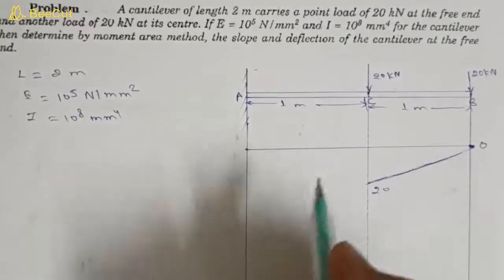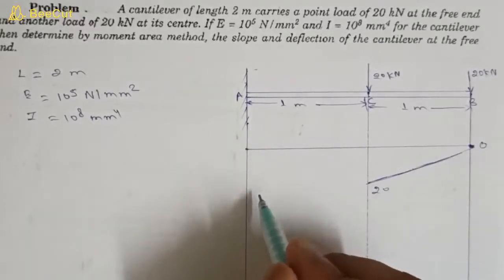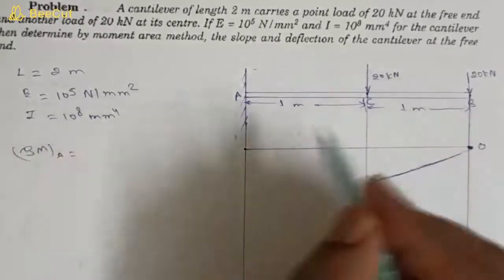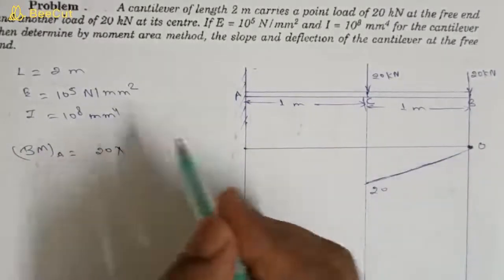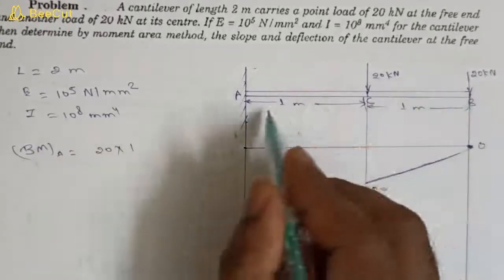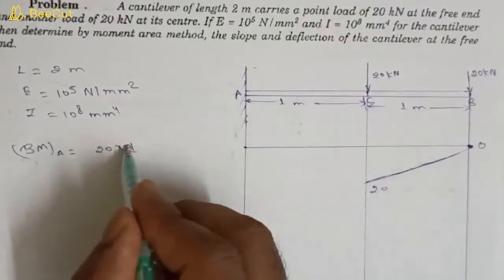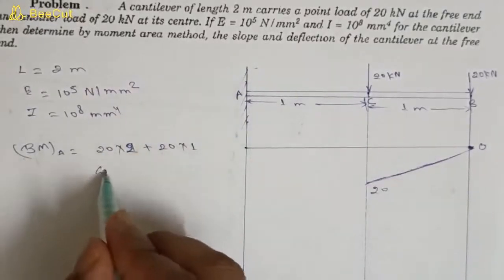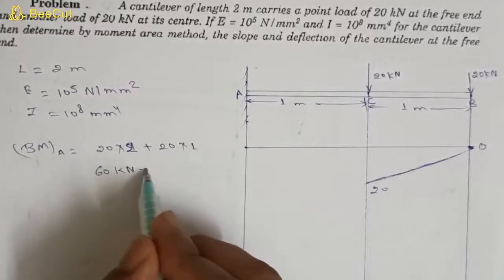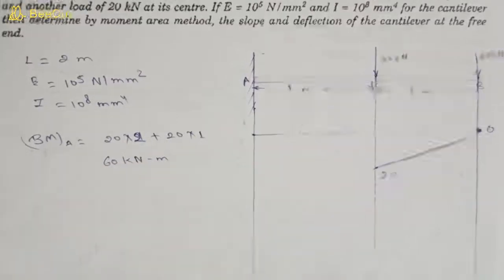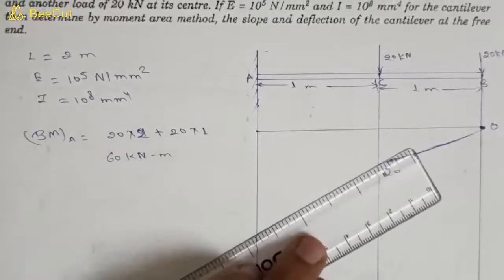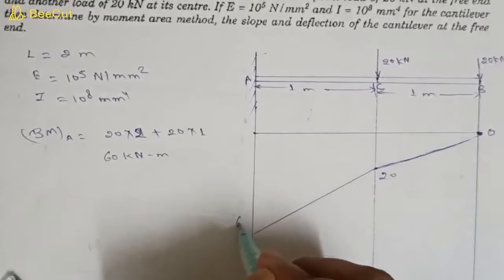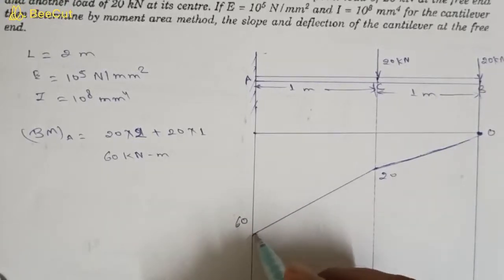At point A, the bending moment equals 20 into 2 plus 20 into 1, which gives 60 kilo Newton meter. So on the diagram, this value is 20 at the center and 60 at point A. We are not writing units due to space constraints.